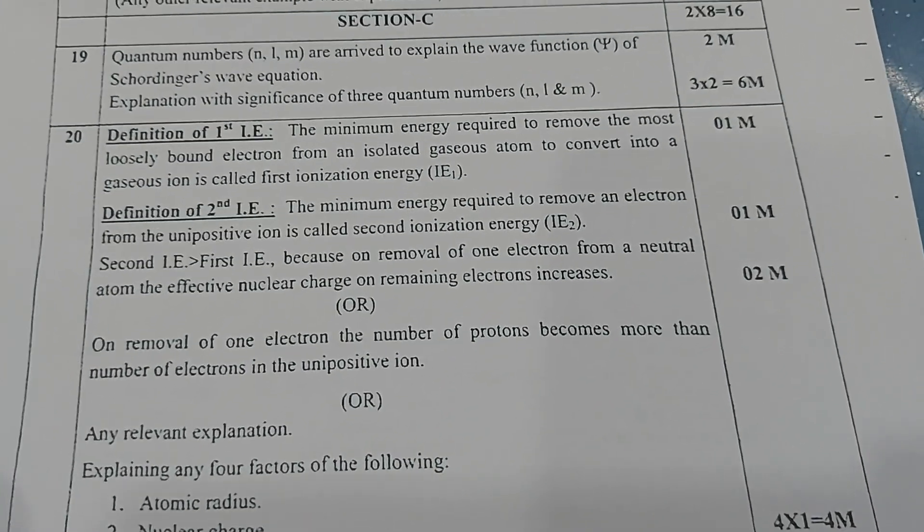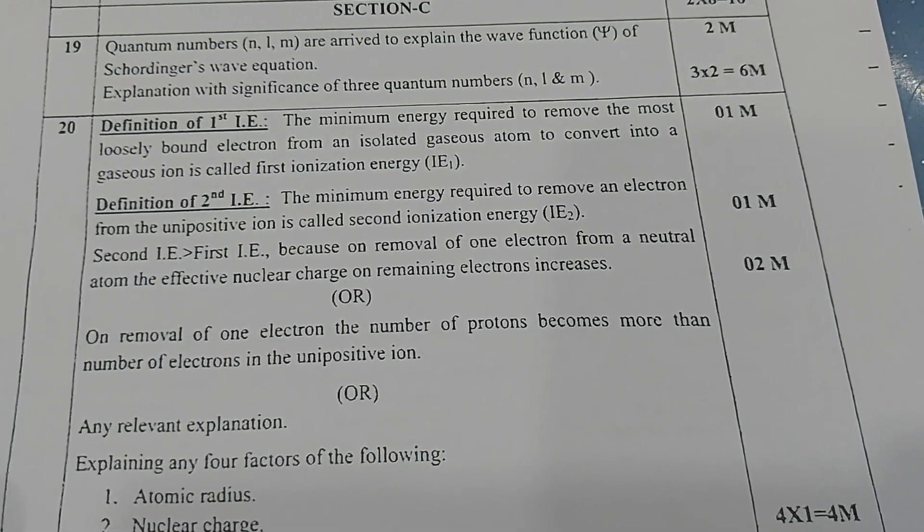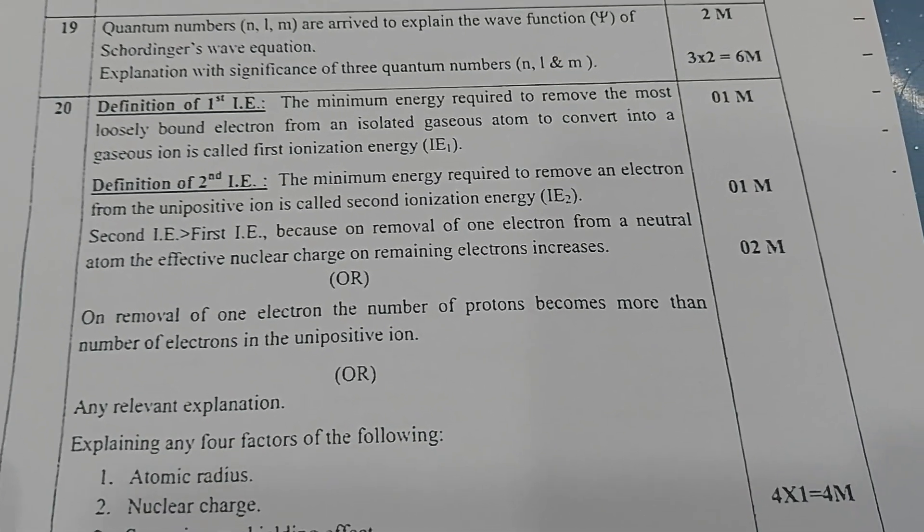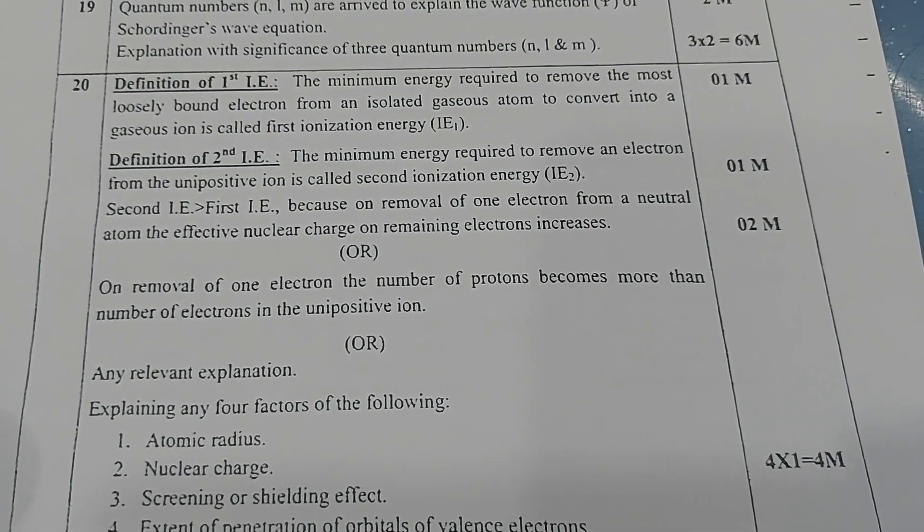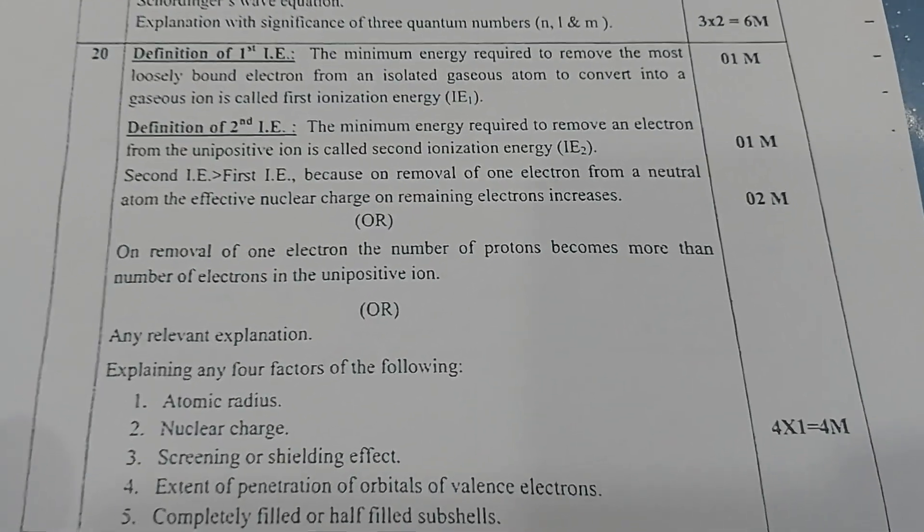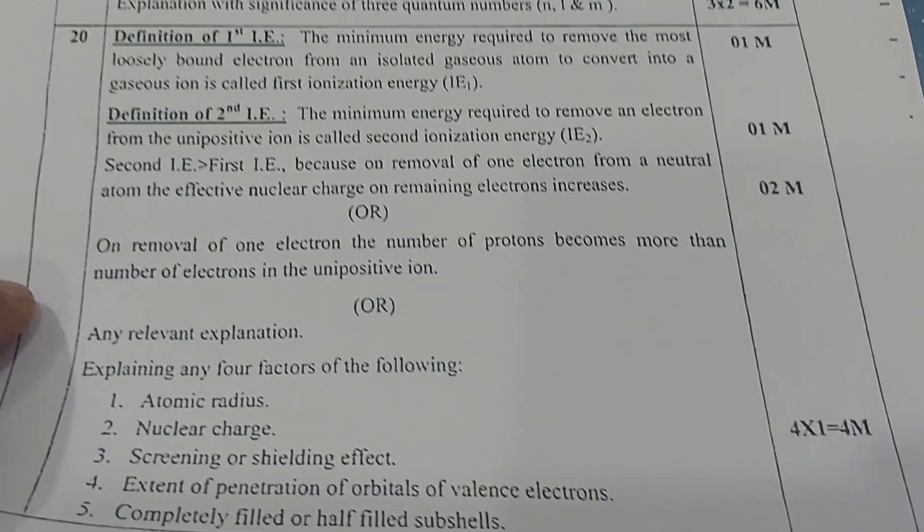Twenty. So here nineteen, explanation with significance of three quantum numbers, n, l, and m. Only in brief they are given. Full description they have not mentioned, only value points, main points they will mention, right?